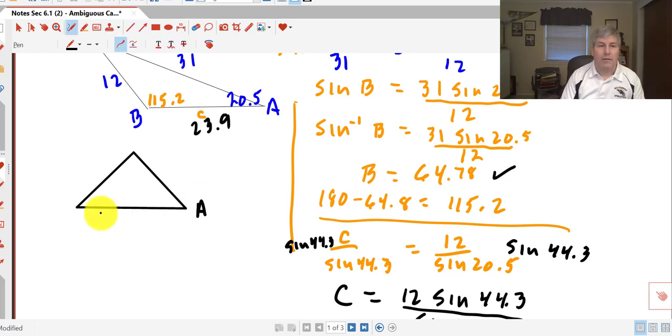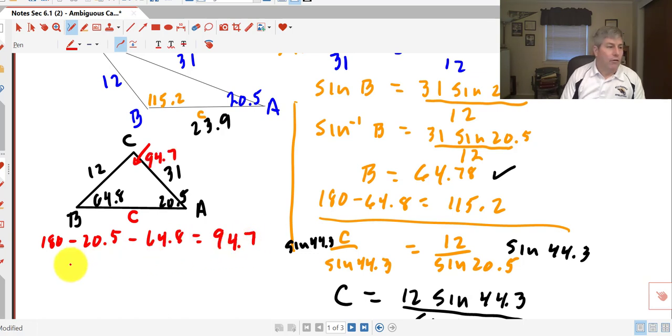In redrawing my triangle, we have angle A, angle B, and angle C. Angle A was 20.5°, angle B could have been 64.8°, and angle C was unknown at the time. Our other known information was side B was 31 meters, side A was 12 meters. We need to find side C. We can find angle C pretty quickly: 180 minus 20.5 minus 64.8 equals 94.7°.